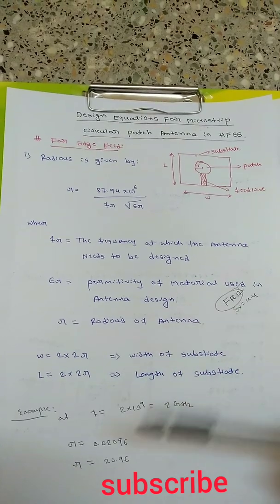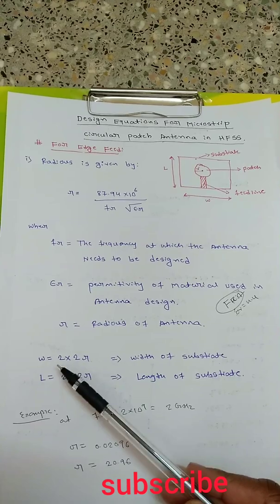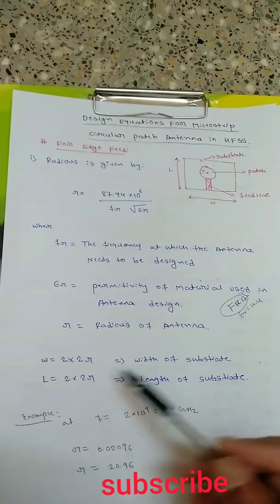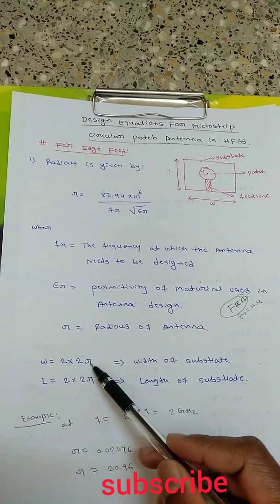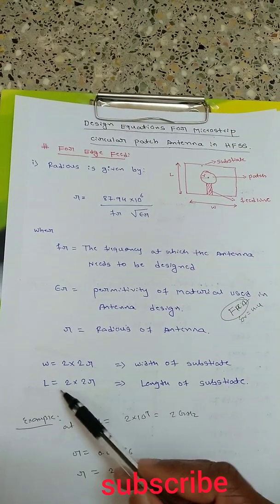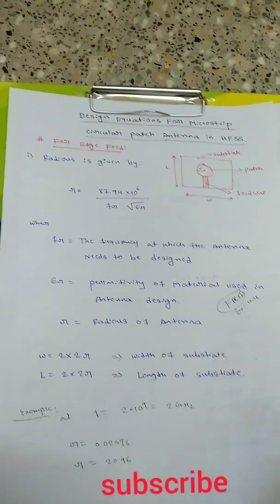r is the radius of antenna. Once we calculate radius, you can find the width of the substrate by multiplying 2 x 2r. Length can be calculated by 2 x 2r. That width and length will be almost same.